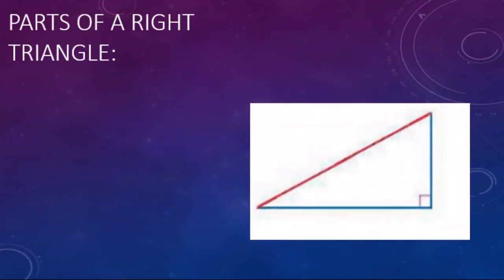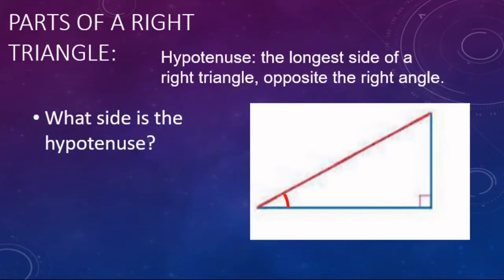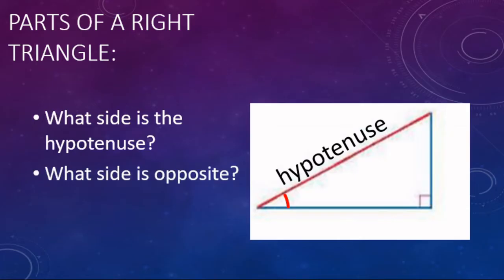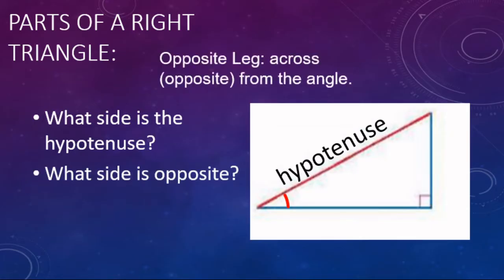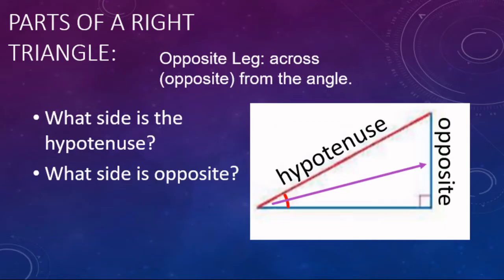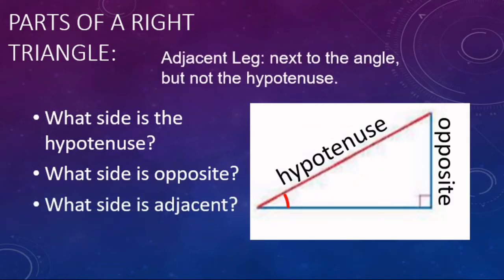Sides of a right triangle. Looking at this angle, we want to identify first the hypotenuse - that's the longest side, it's opposite the right angle. If you look at the right angle and draw a line straight through it, it points to the hypotenuse. Next, the opposite side - the opposite leg is going to be across from the angle. Draw a line through the angle and it points to the opposite side; it's a side that's not touching the angle. And the adjacent leg is touching the angle but it's not the hypotenuse.